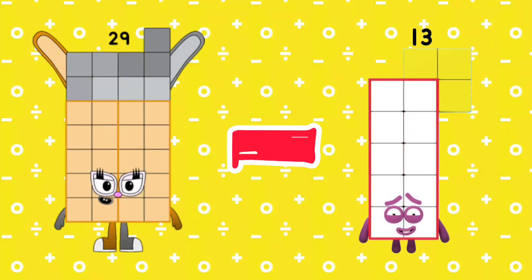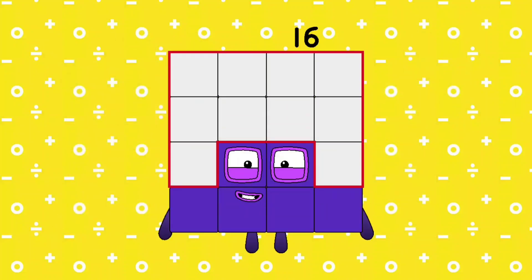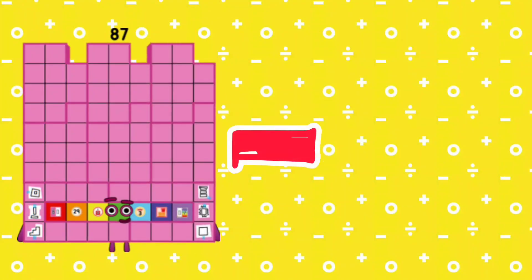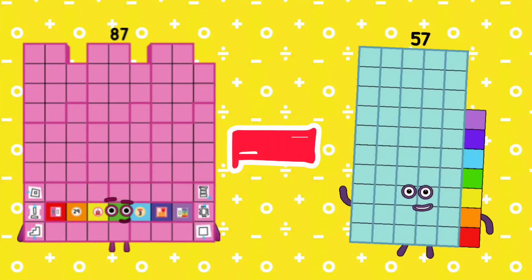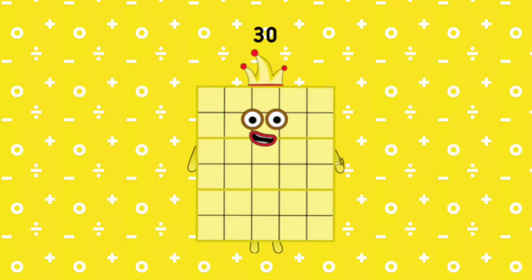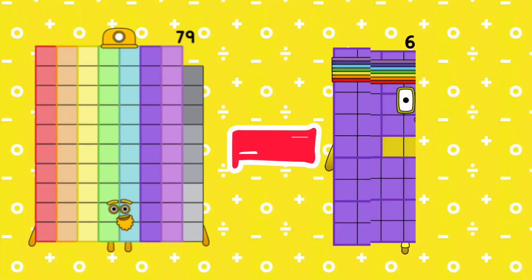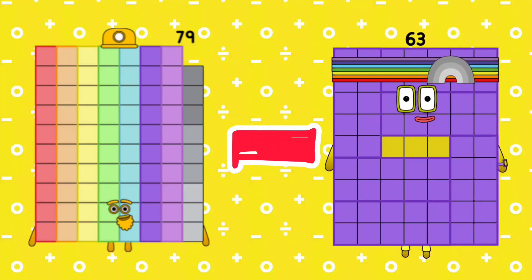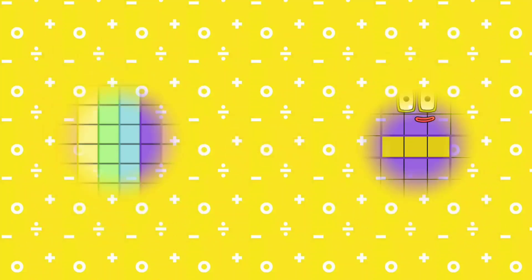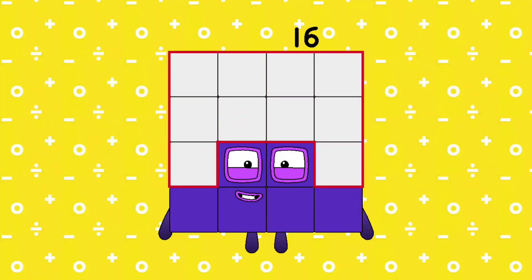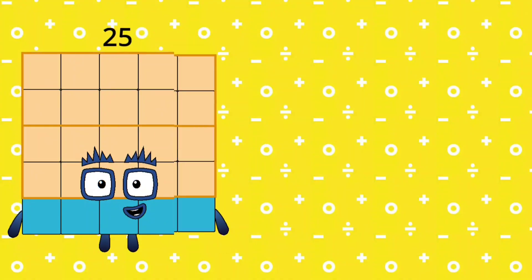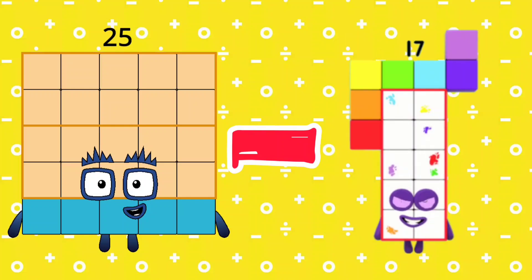29 minus 37 is equal 30. 79 minus 63 is equal 16. 25 minus 17 is equal 8.